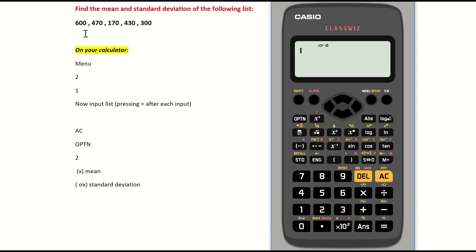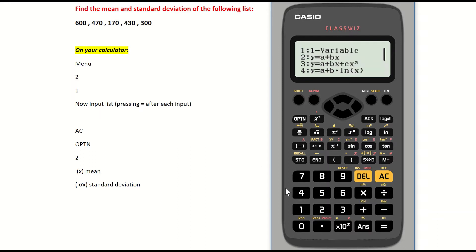We're going to find the mean and standard deviation for the numbers 600, 470, 170, 430, and 300. Press the menu key — it's to the left of the on button — then press 2 for statistics, identifiable by the histogram icon. Then press 1 for one variable, since we're entering a list of values. A table appears. Input 600 and press equals; the number must be confirmed with equals to appear in the table.